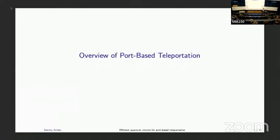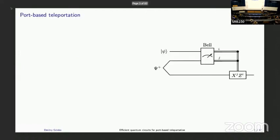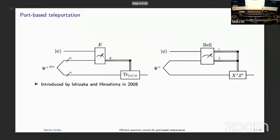Let's start with a brief overview of port-based teleportation. We all know the standard teleportation protocol, which schematically looks like this: at the top we have Alice, and one part belongs to Bob. In the standard protocol, Bob needs to apply some non-trivial correction operation based on the outcome of Alice's measurement. The port-based teleportation protocol, introduced by Ishizaka and Hiroshima, avoids this non-trivial correction operation.